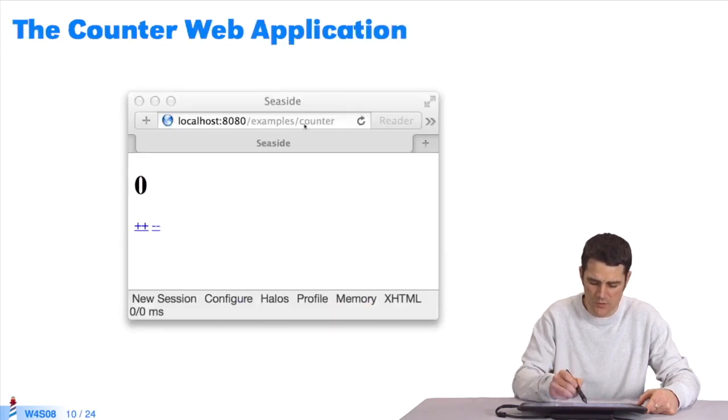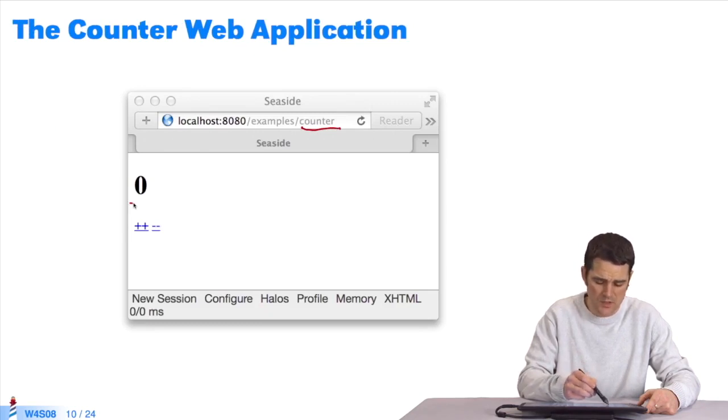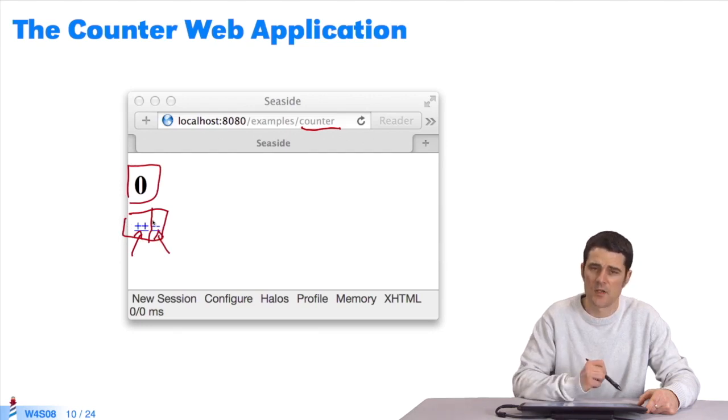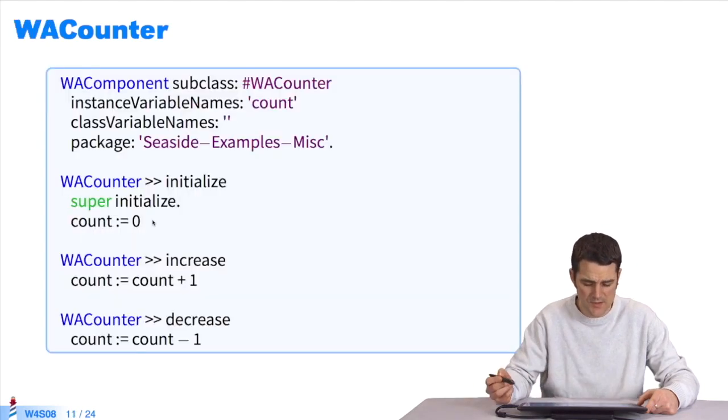Here's an example of my counter application in the URL. It's a component rendered in HTML here. The value of the counter is zero. We have two links here. You click on plus plus to increase the counter value and on minus minus to decrease the value.